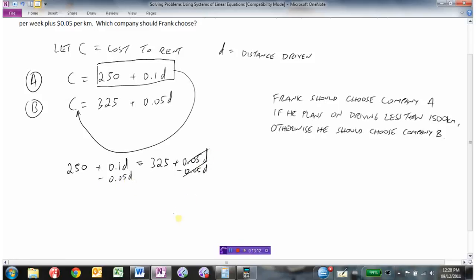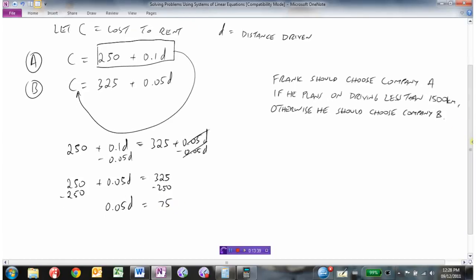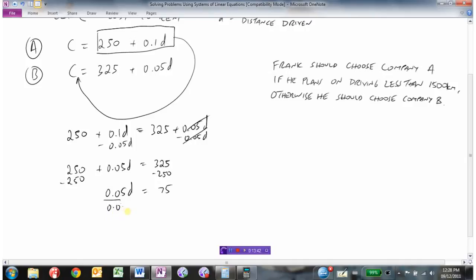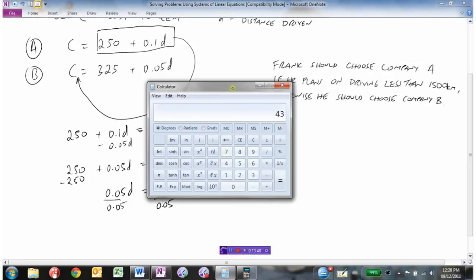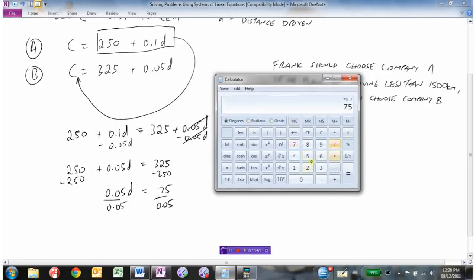Already we just have a simple equation with one variable. I'm going to subtract this from this side to get all my D's on one side. Collecting like terms, 0.1D minus 0.05D is 0.05D. Then subtracting 250 from both sides to isolate the D term gives us this. Finally divide by the coefficient of D to isolate D. 75 divided by 0.05 should give us our 1500.